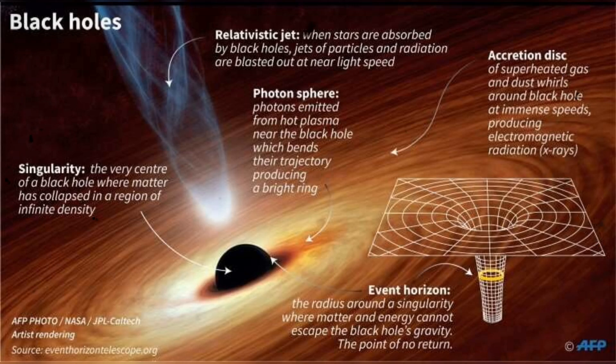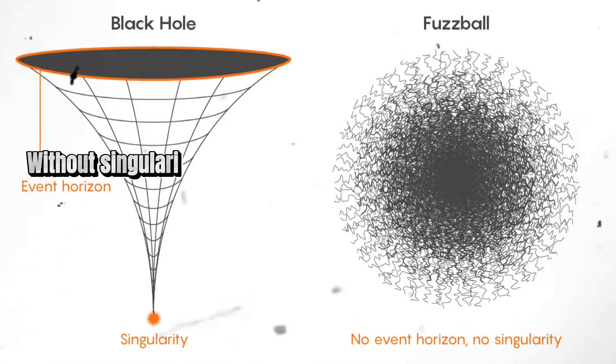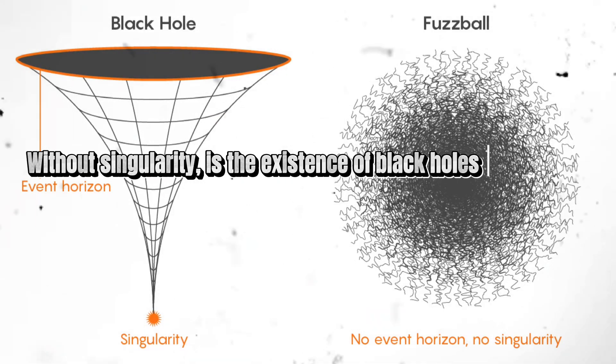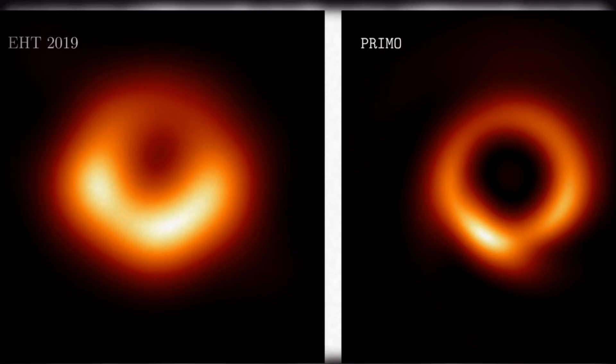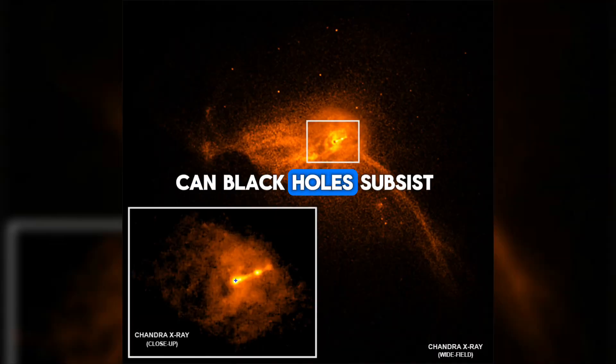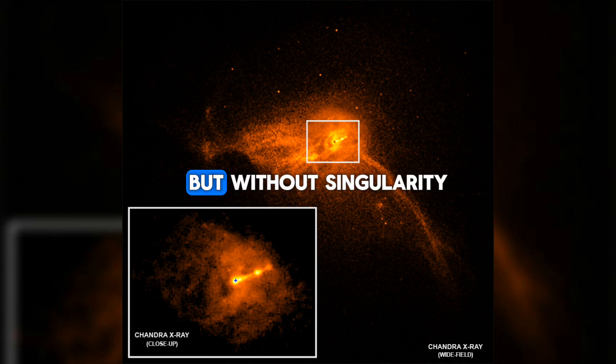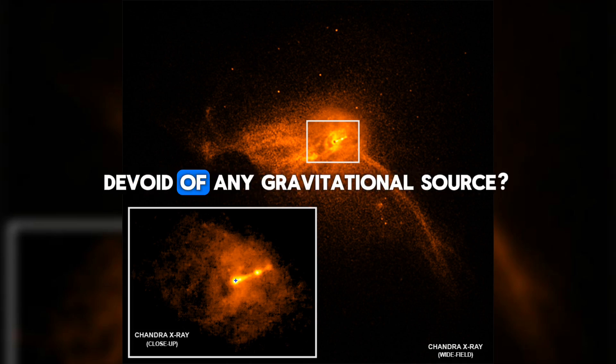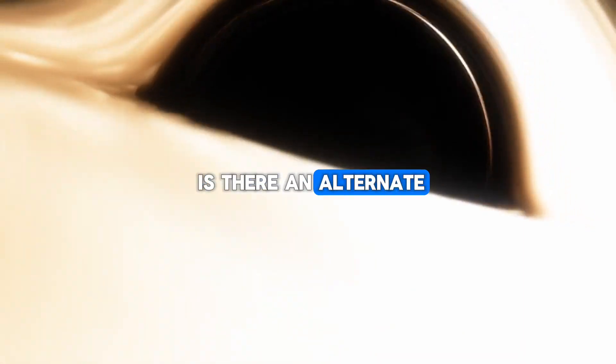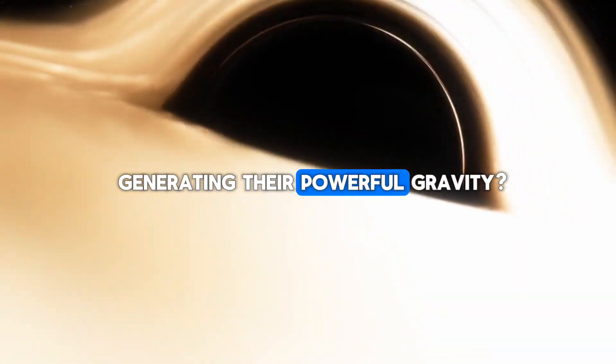In essence, the singularity defines a black hole and its intense gravity creates the event horizon that pulls objects inward. Without singularity, is the existence of black holes a falsehood? Can black holes subsist with an event horizon but without singularity, devoid of any gravitational source? Alternatively, is there an alternate element within them generating their powerful gravity?